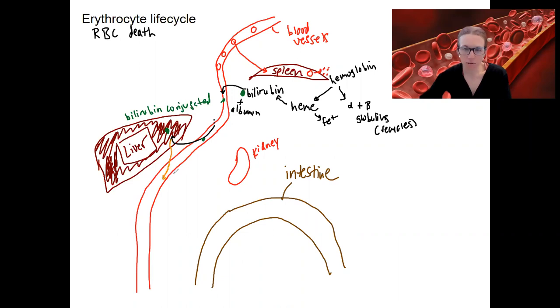Now we've got conjugated bilirubin. This means that it can be secreted out of the body. So how is it a waste, how are we going to secrete bilirubin?